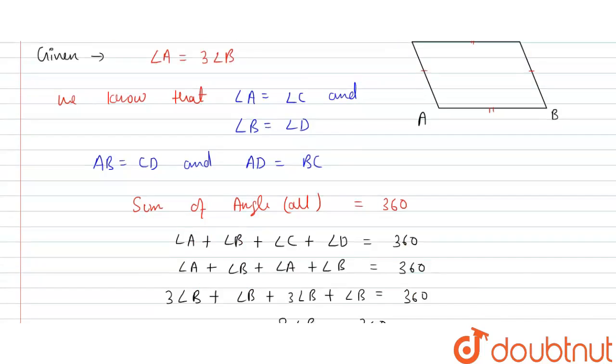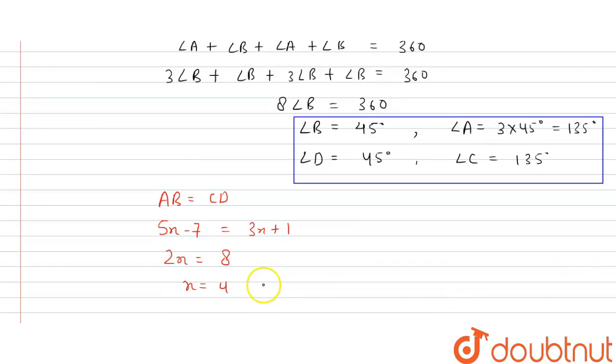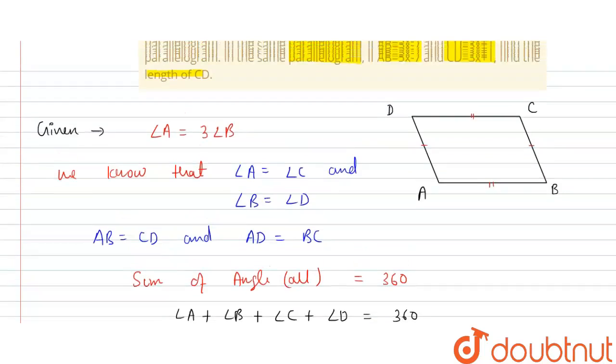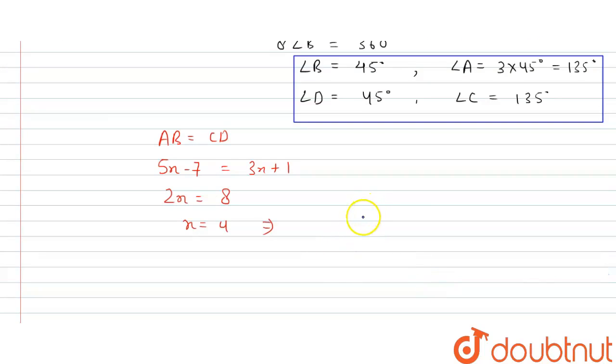So x is equal to 4. And here unit is not given, so we can say: what is CD? The question asks the value of CD. So CD is given in the problem as 3x plus 1. Put x equals 4: 3 into 4 plus 1, this is equal to 13. And we take any unit. This is our final answer. Thank you.